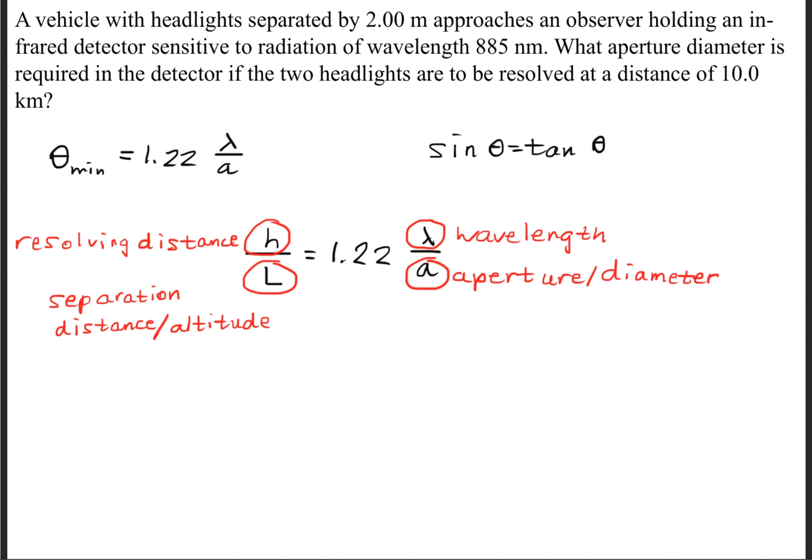In order to solve this question, we're going to be using the Rayleigh criterion and the sine theta equals tangent theta approximation, so that we can rewrite the Rayleigh criterion in this form. What I have written in red is what these symbols represent.